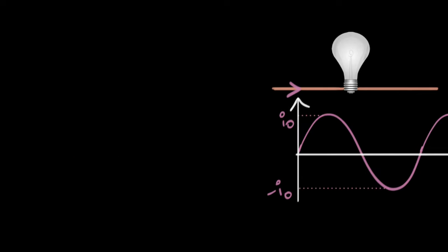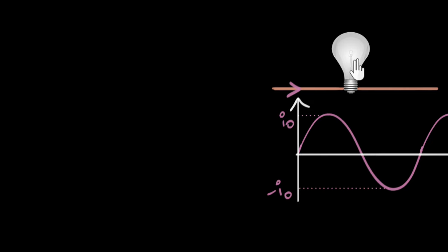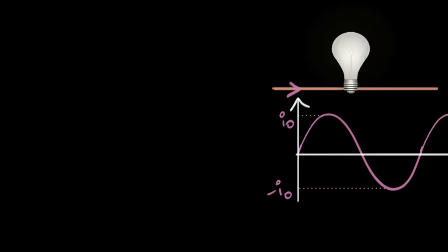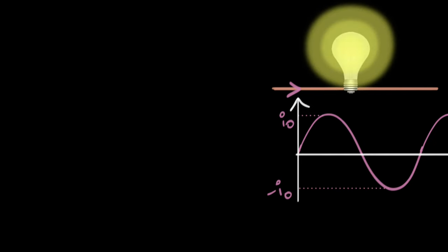Let's start by looking at a situation. Imagine I pass an alternating current through a bulb — a current fluctuating between some peak value I₀ and minus I₀. The current passing through the resistor inside the bulb dissipates power and generates heat. Because the current is fluctuating, the power dissipated also fluctuates. When the current is zero, the power is zero; when it reaches maximum, the power also reaches maximum.